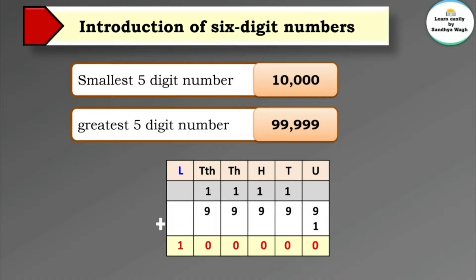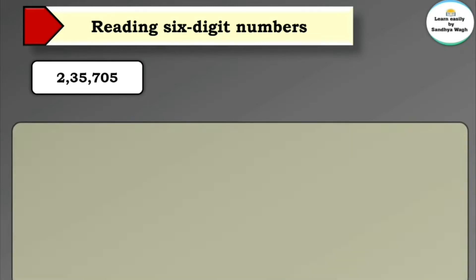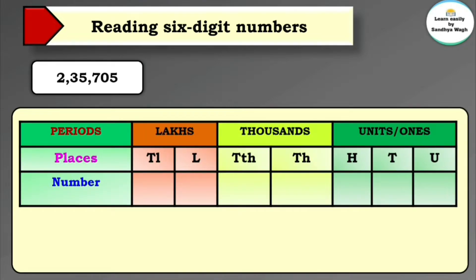This is the six digit smallest number. Now let's learn how to read a six digit number. Here the number is 2,35,705. Before reading this number, let's revise the places of a number and its periods.